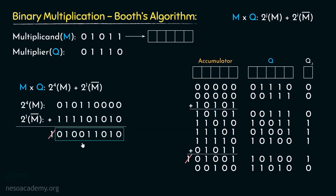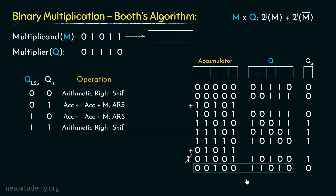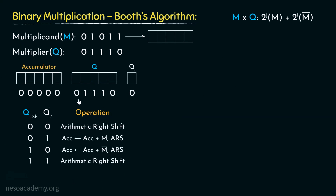Observe — the result obtained here matches the expected result. Both are similar; the only difference is one extra MSB which is 0 and doesn't affect the result at all. The result of the entire operation is obtained through the contents of these two registers. We performed arithmetic right shift 5 times — matching the 5 bits in the multiplier — and only 2 additions. So our configuration needs an accumulator, a register Q, and a flip-flop named Q-1.